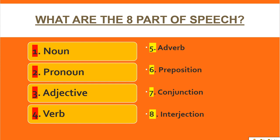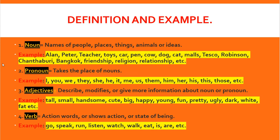I am going to show you the definition, the meaning, and examples. First, we have noun. Noun means names of people, places, things, animals, or ideas. For names of people, examples include Alan, Peter, teacher.